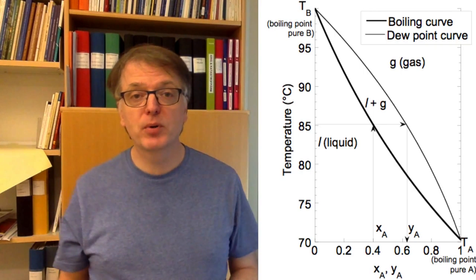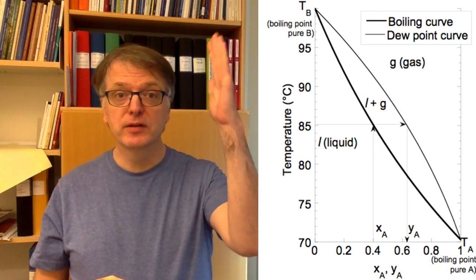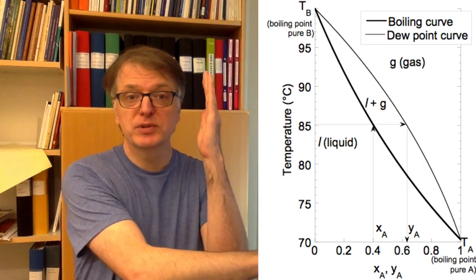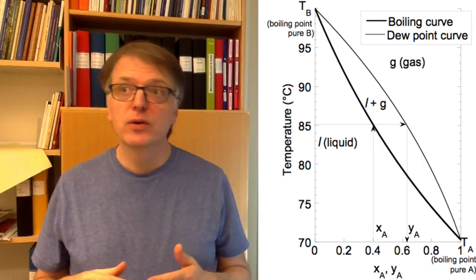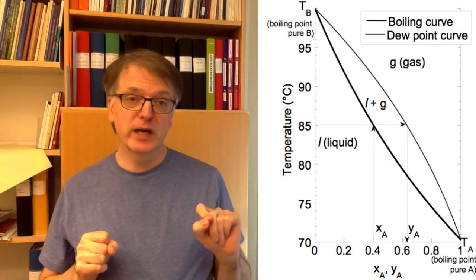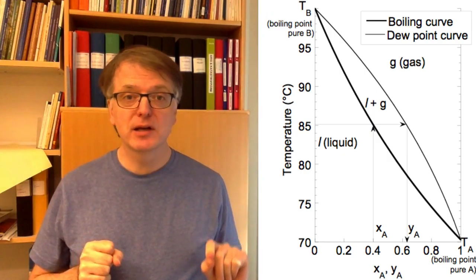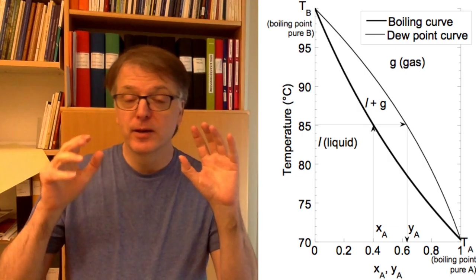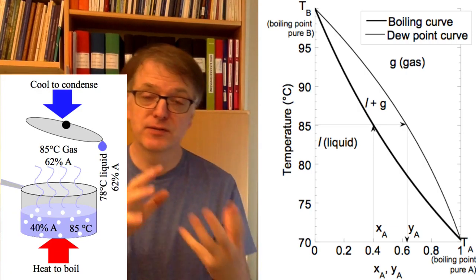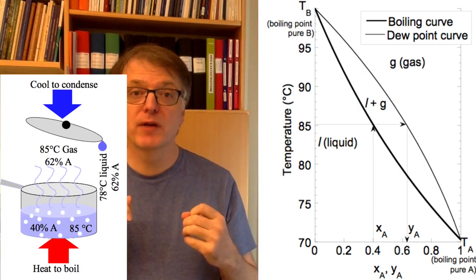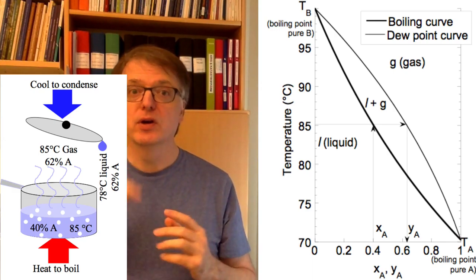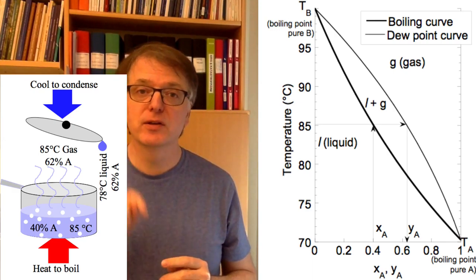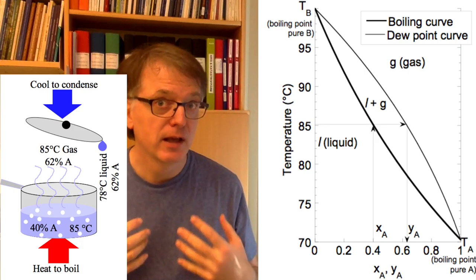In a boiling point diagram, a diagram where you have the temperature on one axis and the composition on the other axis, you can see here that you go in for the composition of the boiling liquid and you go straight up. The boiling liquid and the condensing gas, if they are in equilibrium, they have to have the same temperature. So you draw a horizontal line and then you find the composition of the gas.